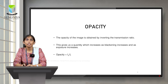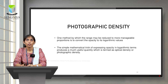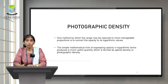Coming to opacity — opacity is just the opposite of your transmission ratio. It is incident light to that of transmitted light. Opacity tells us about the degree of blackening in the film. The values of opacity are in a wide range, so we convert these wide-range values into logarithmic values. When we convert it into logarithmic values, this is known as photographic density or optical density.